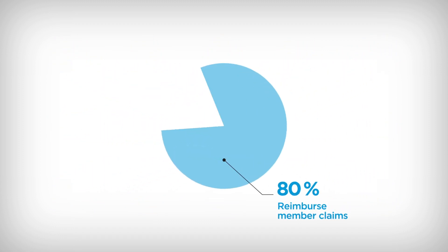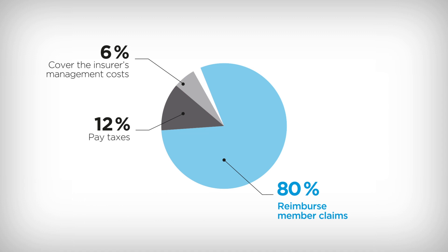80% go toward reimbursing members' claims. 12% go toward taxes. 6% cover the insurer's management costs. And 2% is put toward building a reserve fund for members' claims.